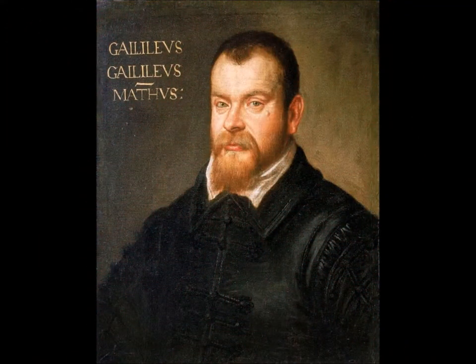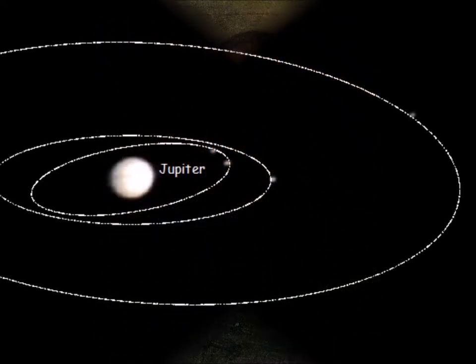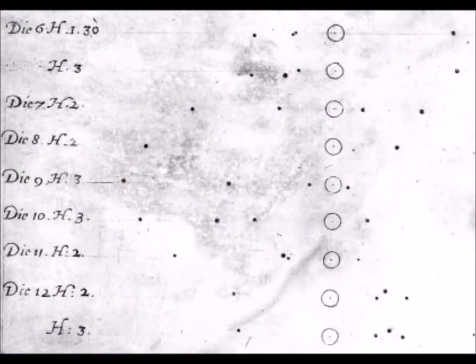By discovering the satellites of Jupiter and their rotation around this planet, Galileo definitively ruined the idea of a fixed center of the world. There are centers of the world everywhere, thus no center of the world.